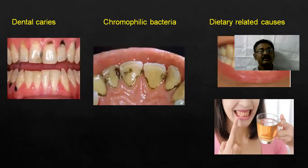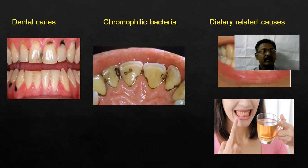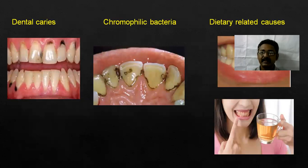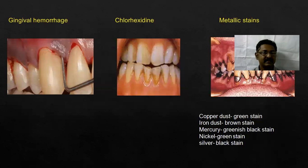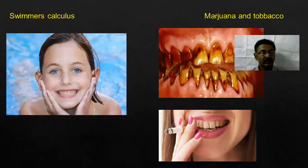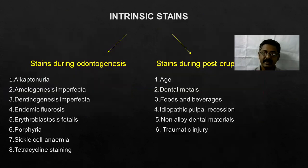These are some clinical photographs of the different discolorations: dental caries, chromophilic bacteria, then diet-related causes — that is tea, coffee stains, etc. This is gingival hemorrhage, chlorhexidine stain, then metallic stains. This is swimmer's calculus, then tobacco stains.